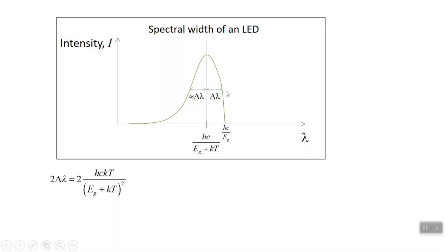We'll say that the width of this peak, the full width at half maximum of this peak, is approximately 2 delta lambda. And so there's the expression we have for delta lambda again. Just put the 2 in front of it.